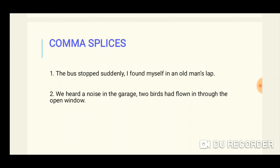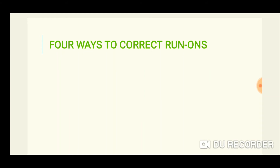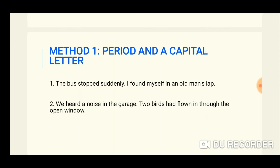For example: 'We heard a noise in the garage, two birds had flown in through the open window.' Comma splices are the most common kind of run-on. Students sense that some connection is needed between two thoughts and put a comma at the dividing point, but the comma alone is not sufficient — a stronger, clearer mark is needed between the two thoughts.